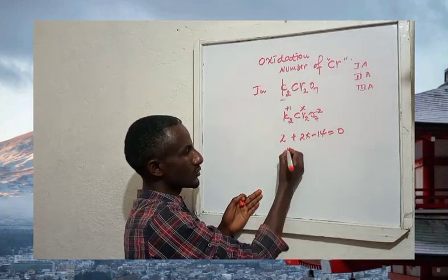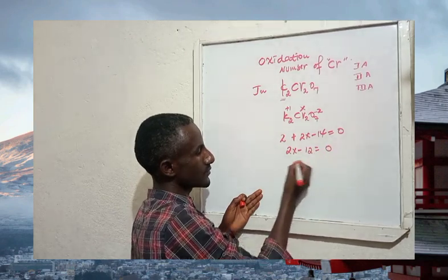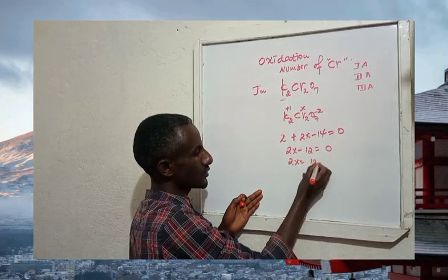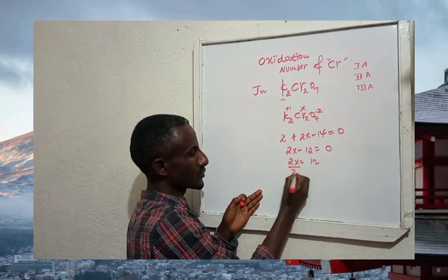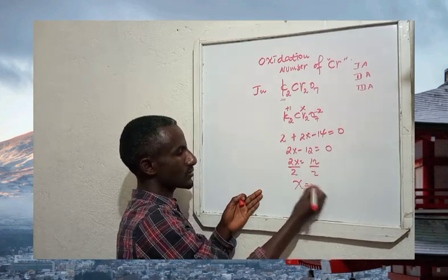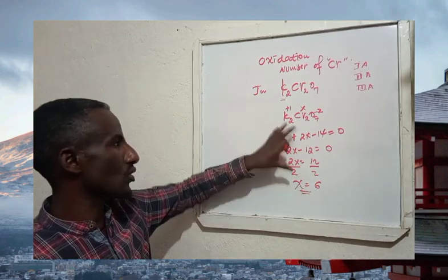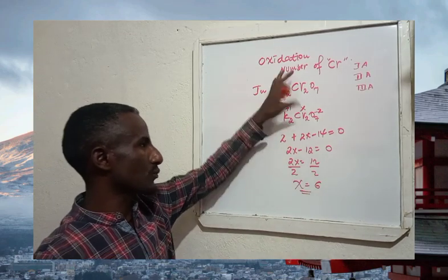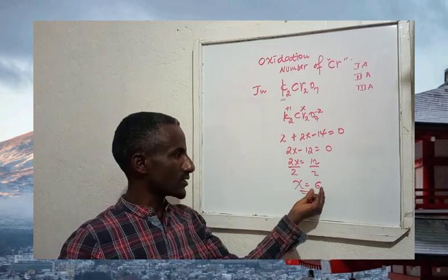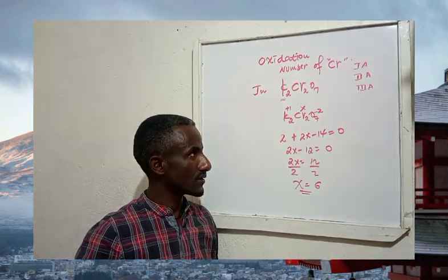So 2x - 12 = 0, meaning 2x = 12, and x = 6. Therefore, the oxidation number of chromium in potassium dichromate is positive six. Thank you.